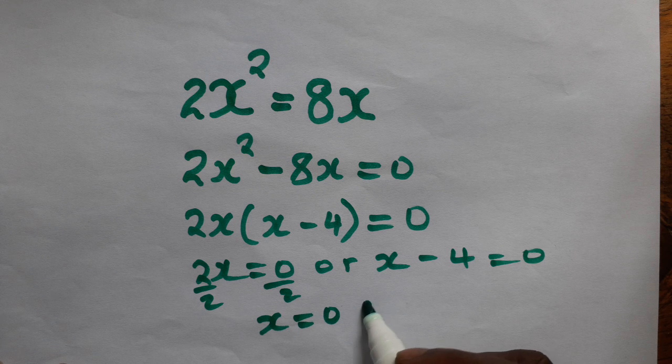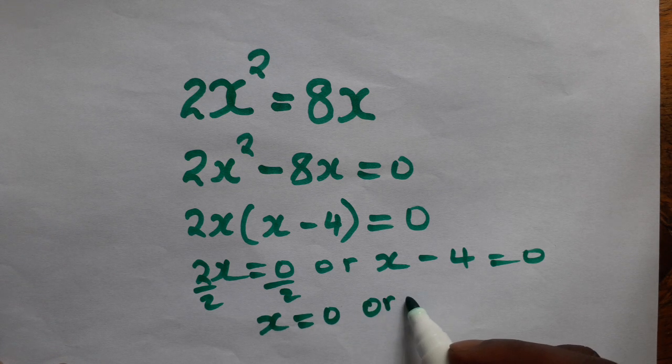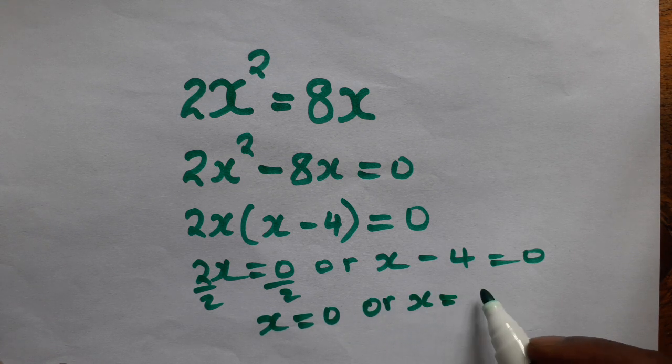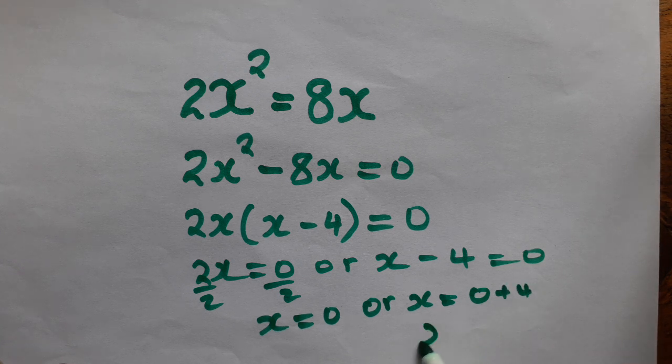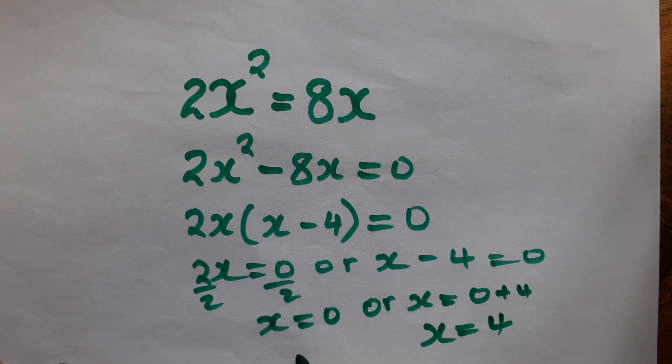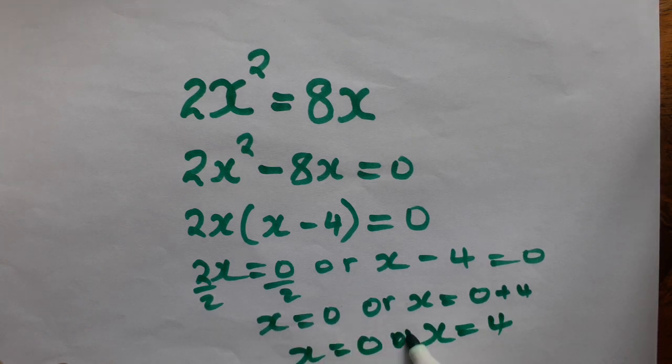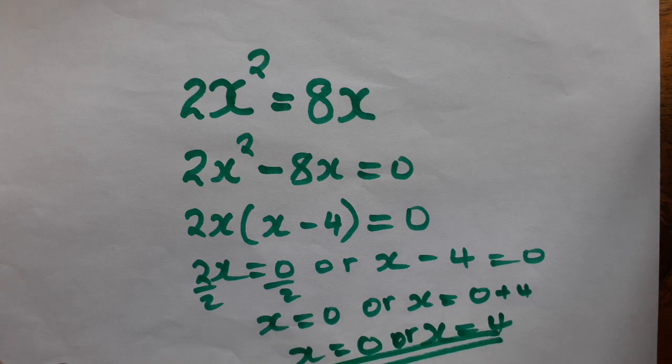Or x equals to zero plus four, so x equals to zero or x equals to four.